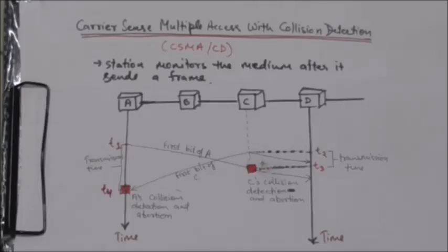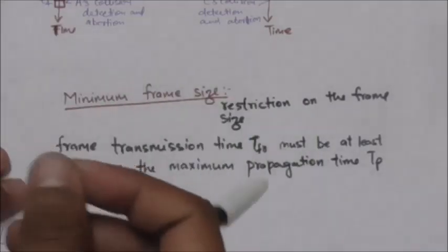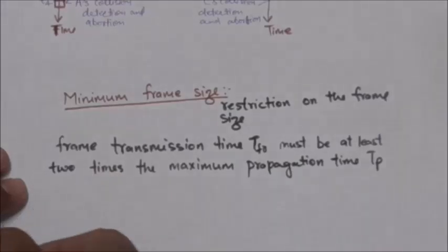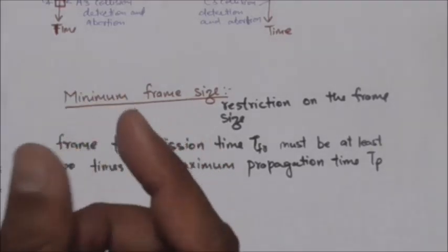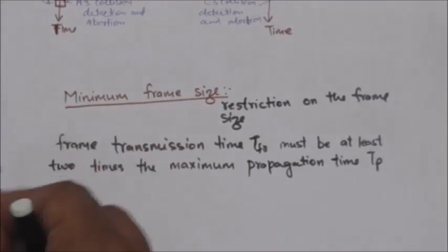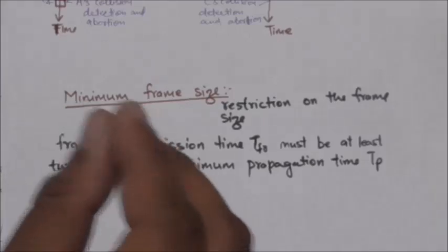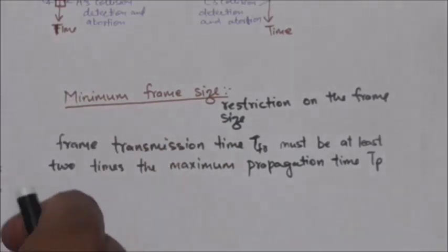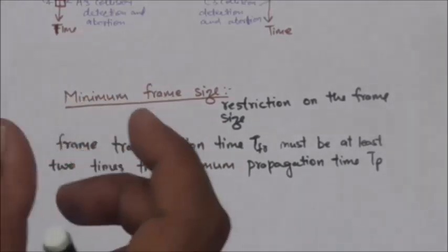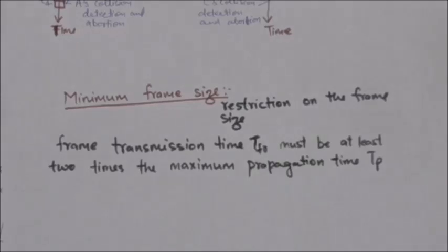At time t4, the transmission of station A's frame, which is incomplete, is aborted, and at time t3, the transmission of station C's frame is aborted. For CSMA/CD to work, there is a restriction on the frame size: if there is a collision, the sending station must detect it before sending the last bit of the frame and abort the transmission. Once the entire frame is sent, the station does not keep a copy and does not monitor the line. Therefore, the frame transmission time must be at least two times the maximum propagation time.